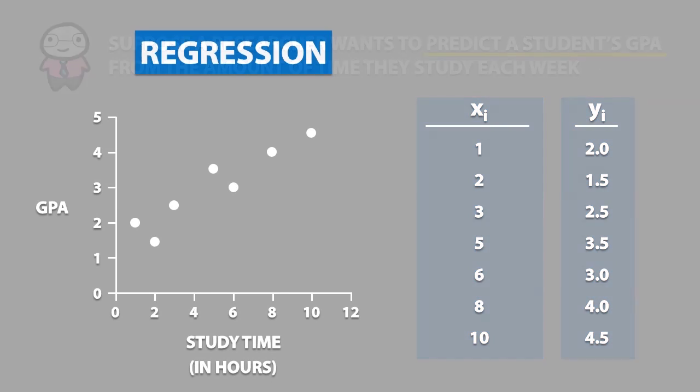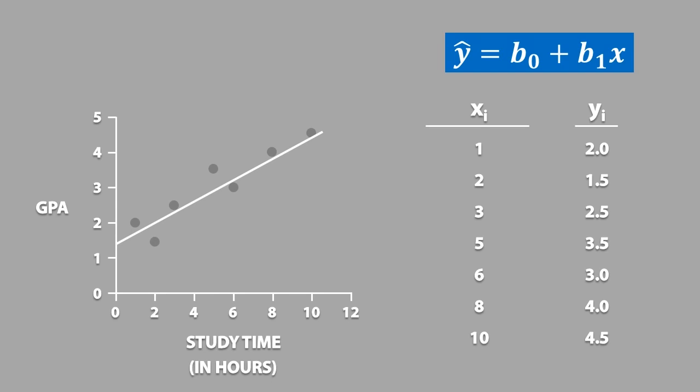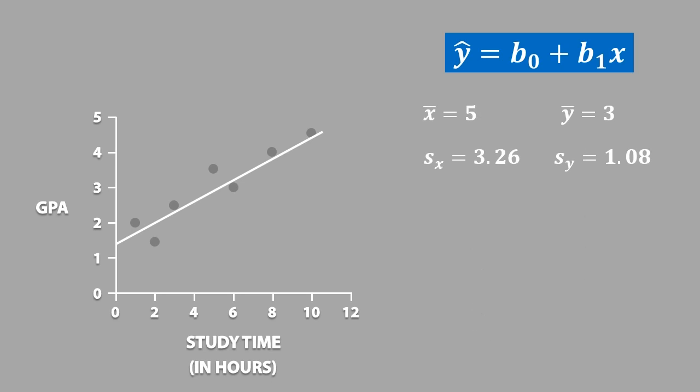Recall that when we are dealing with regression, we don't really care about each individual point. We are only interested in the line that represents the pattern of data. In order for us to use the regression formula, we need to calculate the mean and standard deviations for each variable, which you should already know how to do. We also need to calculate the correlation, which you should also know how to do.